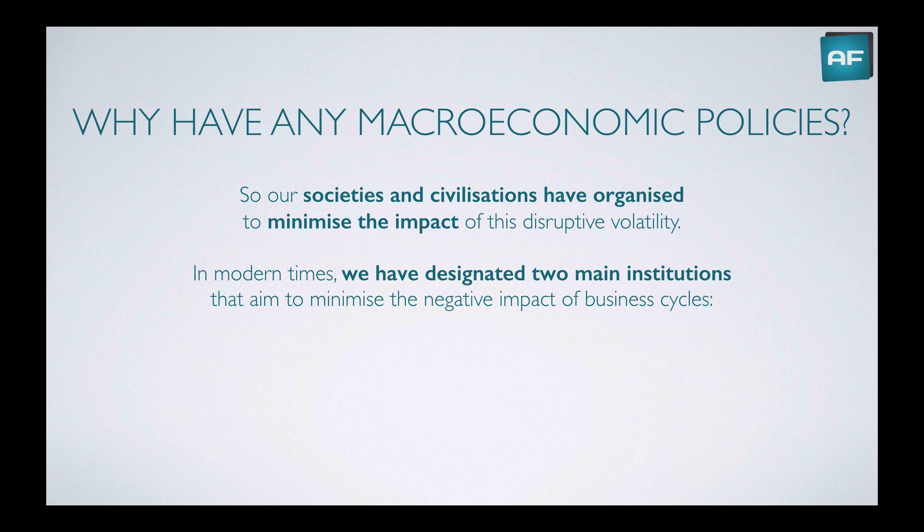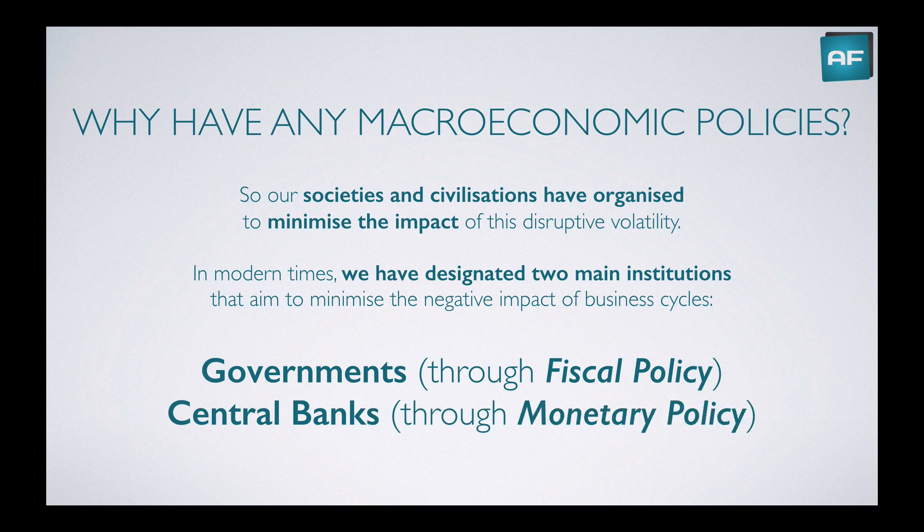So our societies have organized, and in modern times we've designated two main institutions that aim to minimize the negative impact of business cycles. We've designated governments to help out with the business cycle, and they do this through fiscal policy. And we've also created the concept of central banks, and they operate monetary policy.